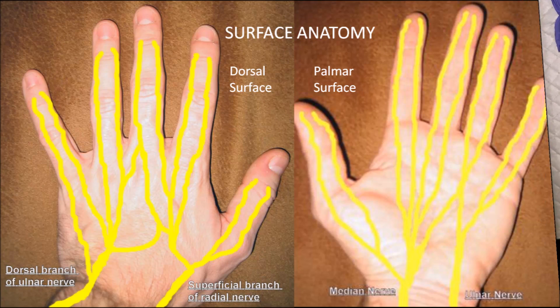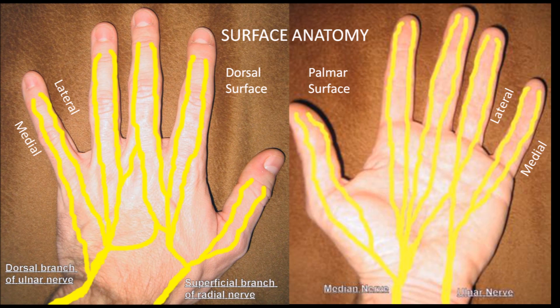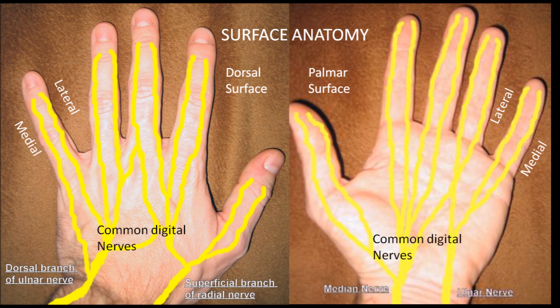In order to perform a digital nerve block, you need to be confident with the anatomy of the digital nerves. Each finger is supplied dorsally and ventrally with medial and lateral nerves on both sides. This means that each digit is supplied by 4 digital nerves, all of which need to be anaesthetized to achieve a complete block.